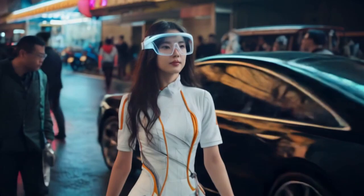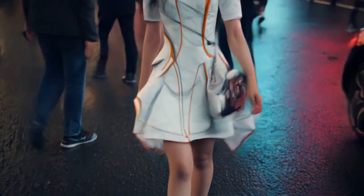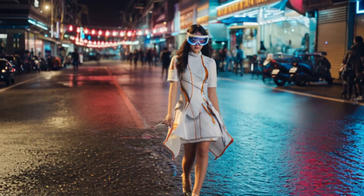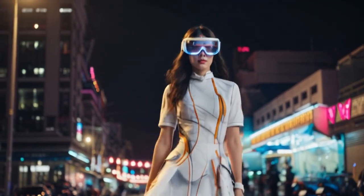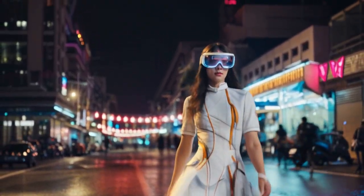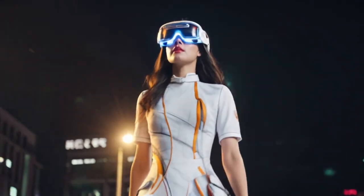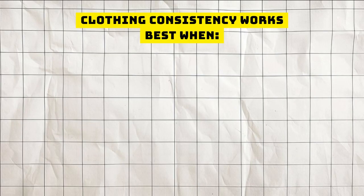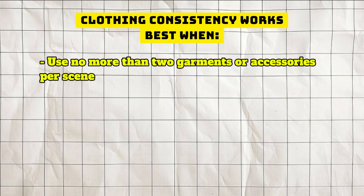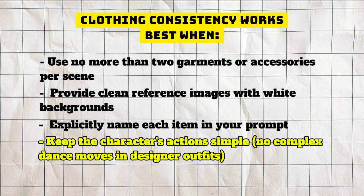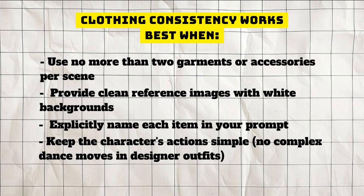For round two I updated my prompt to: 'Woman with white dress holding a white bag and wearing augmented reality goggles walking on the street.' The dress details improved a bit, but the bag completely vanished. Poof. Gone. This taught me a crucial lesson: Kling Elements seems to get overwhelmed when trying to focus on too many clothing items simultaneously. Clothing consistency works best when you stick to a max of two garments or accessories per scene, use super clean reference images with white backgrounds, explicitly name each item in your prompt, and keep the character's actions simple. Less is more.